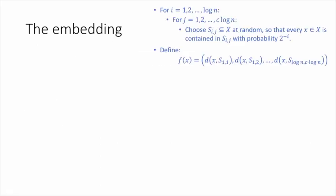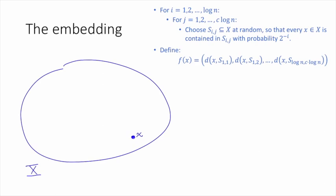Here's a picture of what this embedding is doing. Suppose that this is our space X, and we have some point, little x, that we'd like to embed. So the first thing we're going to do, this is for i equals 1 and j equals 1, is I'm going to choose a subset of X at random, including every point with probability a half. So I'm going to choose like a pretty dense random subset. Then I'm going to find the closest point in this subset to x. Let's say it's this one here. Then I'm going to take this distance, which is d(x, S_{1,1}), and write that as the first coordinate in my vector.